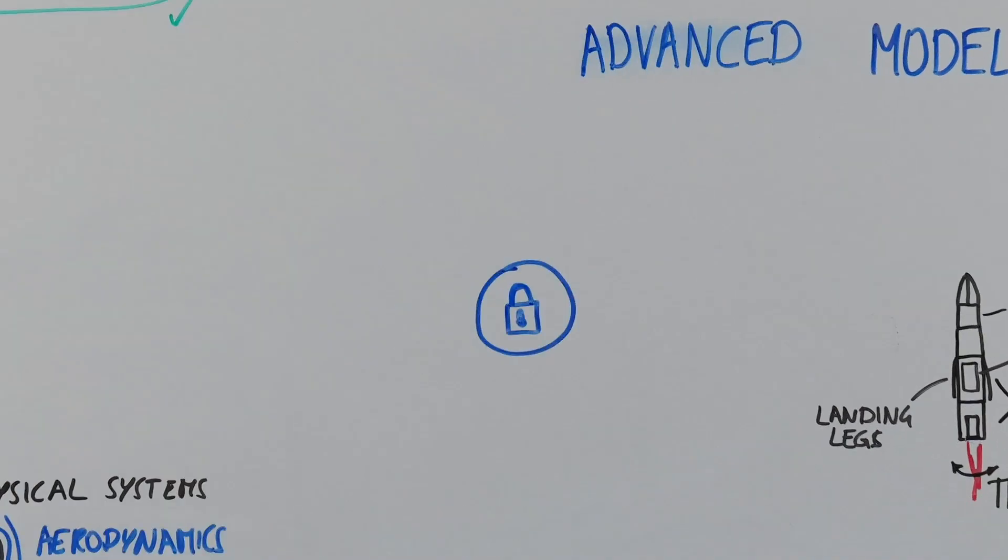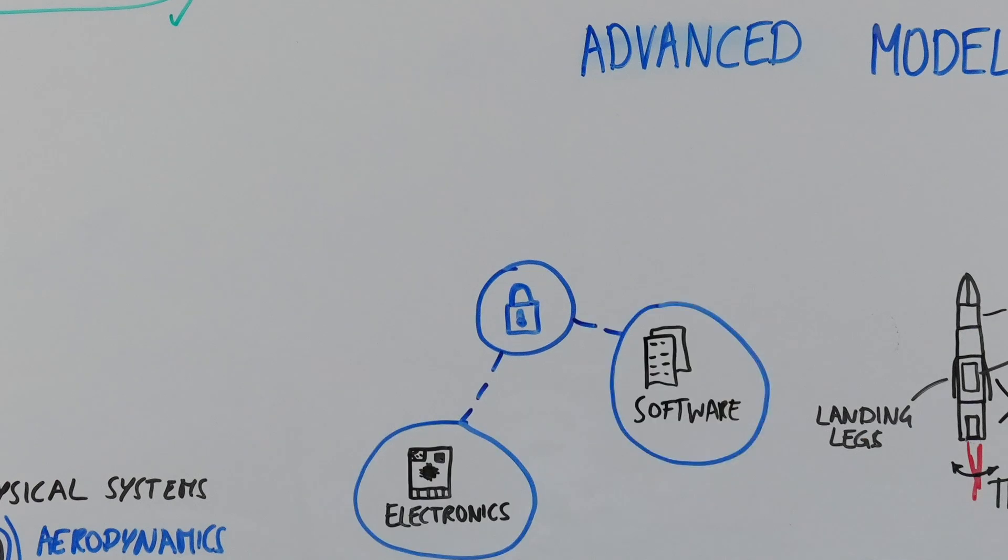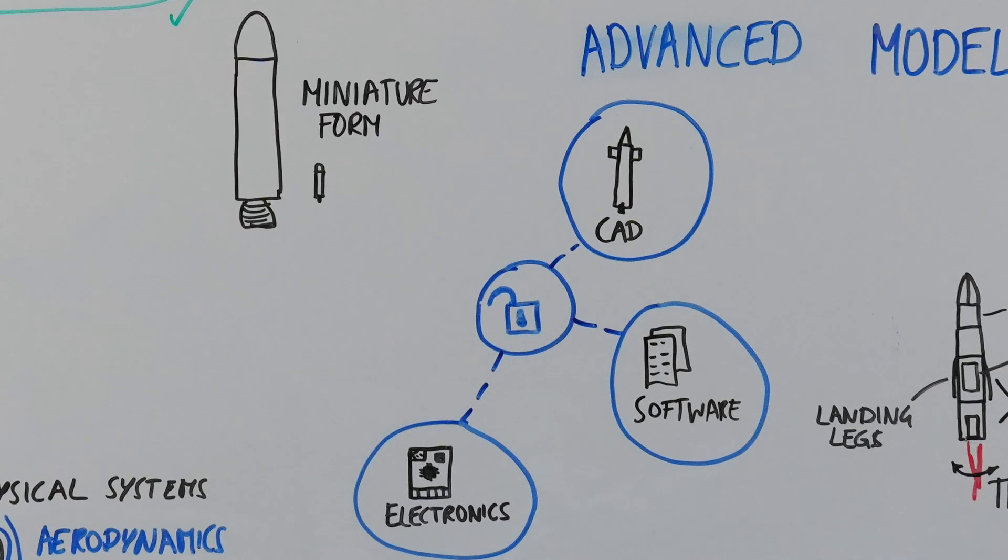Achieving these ambitious goals involves integrating electronics, advanced software, and complex physical systems at the model scale. These processes are what advanced model rocketry is all about: applying aerospace principles in a miniature form and gaining hands-on experience in the fascinating world of aerospace engineering.